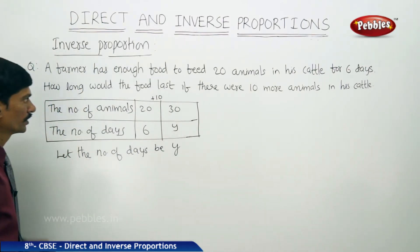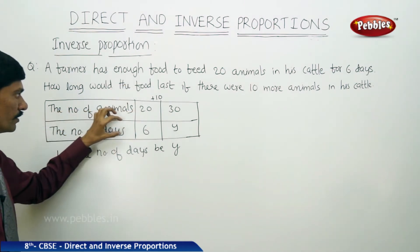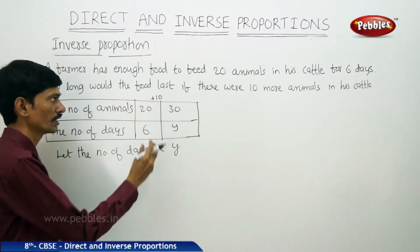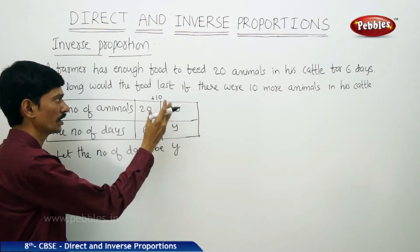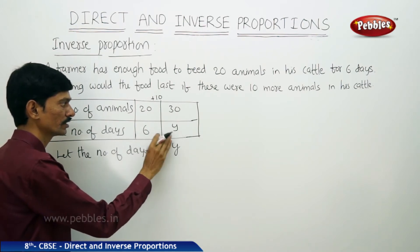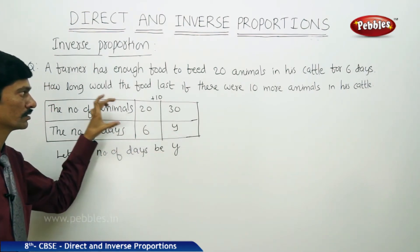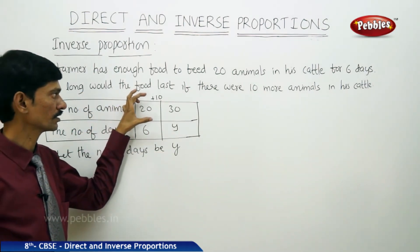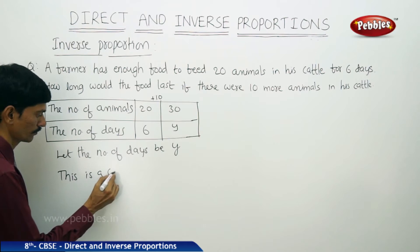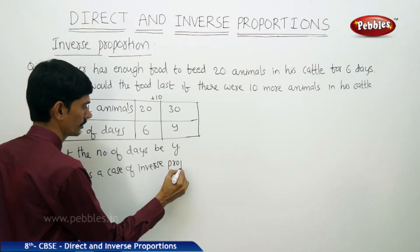If he has 20 animals, he can feed them for 6 days. If he has 30 animals — 10 more — then the food lasts only a few days, less than 6. The number of animals is increasing while the number of days is decreasing, so this is a case of inverse proportion.